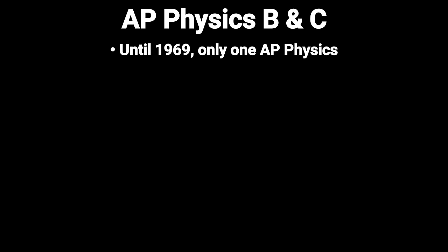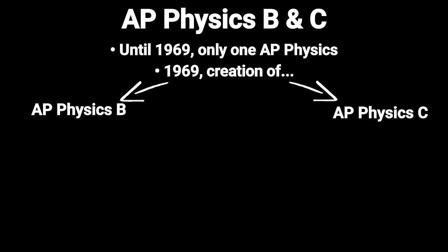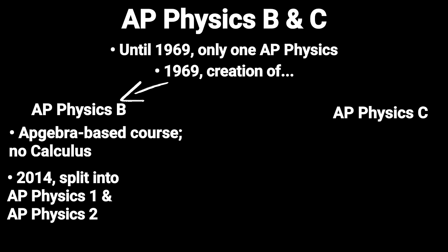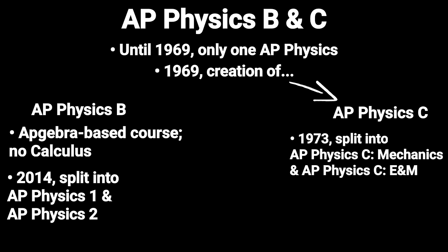Number 5: AP Physics B and AP Physics C. Until 1969, only a single AP Physics course existed. In 1969, it was split into AP Physics B and AP Physics C, each with its own exam. AP Physics B was equivalent to an introductory algebra-based college physics course and did not use calculus. In 2014, AP Physics B was replaced by AP Physics 1 and 2. From 1969 to 1972, AP Physics C was a single course covering all standard introductory university physics topics including mechanics, fluids, electricity, and magnetism. In 1973, the College Board split it into AP Physics C: Mechanics and AP Physics C: Electricity and Magnetism.